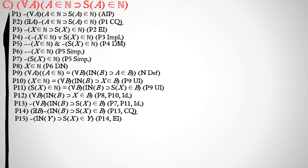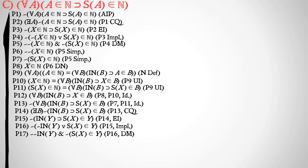Then we do a change of quantifier on premise 13 and existentially instantiate B to a new variable Y. We go through the same process as before: change our implication to a disjunction, distribute the negation using DeMorgan's Law, and split it into a conjunction. Next, we do universal instantiation on premise 12, plugging in Y for B. We're able to do this because we're universally instantiating Y, and so we're able to use a previously used variable. If we had done this in the opposite order — universally instantiated first and then existentially instantiated — we would have needed a new variable.